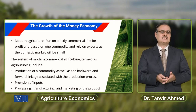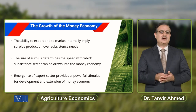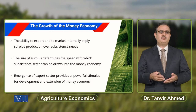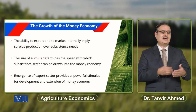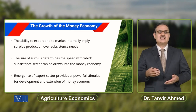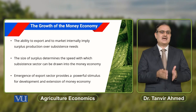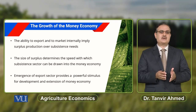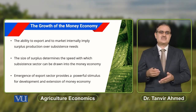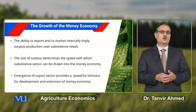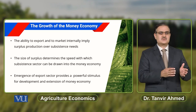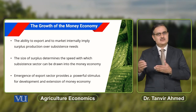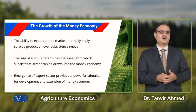When we talk about commercial agriculture, we talk about agribusiness. The ability to export or to market internally implies there is surplus production, and that surplus production is over subsistence needs. The size of the surplus determines the speed with which the subsistence sector can be drawn into the money economy. If you generate a large surplus, the subsistence sector can be drawn into the money economy.